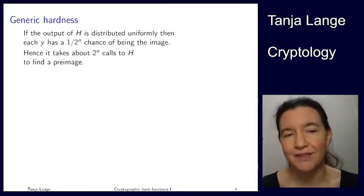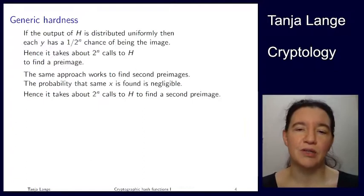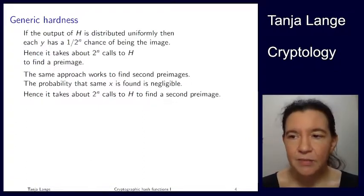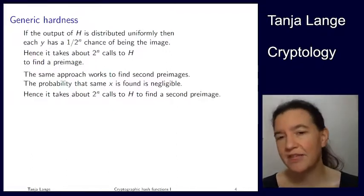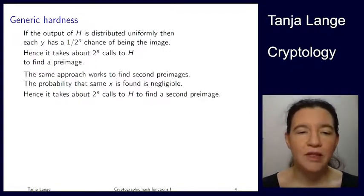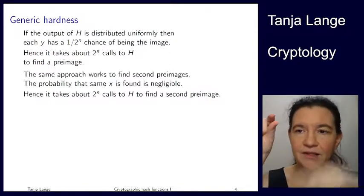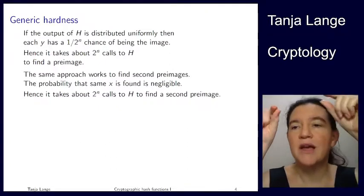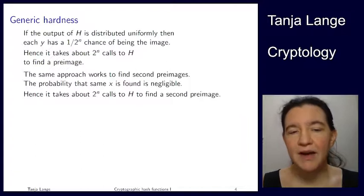Similarly, for second pre-images: you randomly sample some X prime, check that it's not the same as X, and check whether the output equals H(X). Randomly sample X prime and check whether the output matches. Also there, you have a 1/2^N chance of being right, so you have to do 2^N calls.